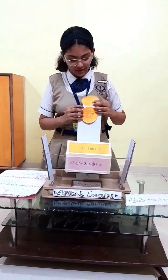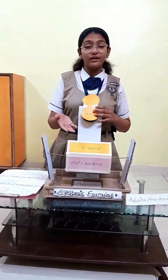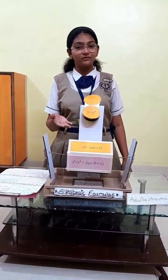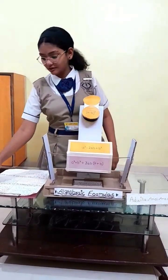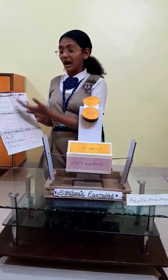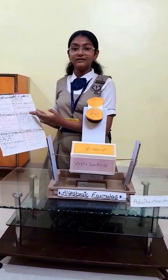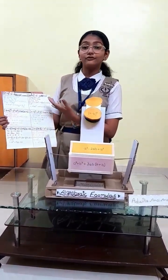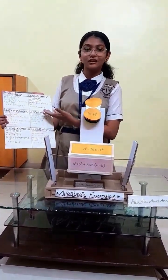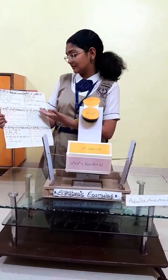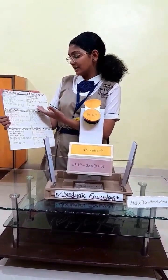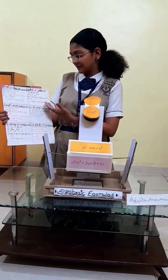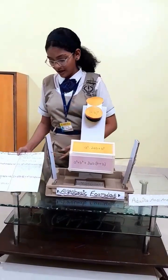For example, (a minus b) square is equal to a square minus 2ab plus b square. First we will write the formula. After writing the formula, we will substitute the value. After substituting the value, we will get the answer: 25x square minus 40x plus 16.